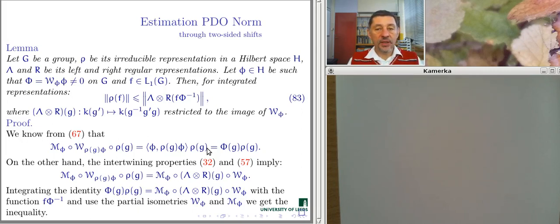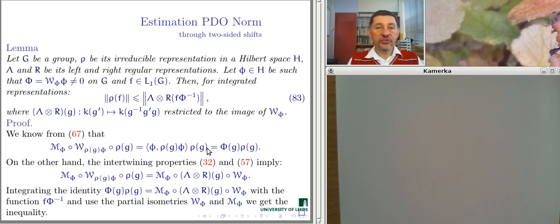You may not follow every detail of the brief presentation that follows on how exactly the L² estimation for pseudo-differential operators is obtained, but I hope you will follow the idea that at every stage we use only properties of the Heisenberg group. If you are convinced that the properties of the Heisenberg group are indeed sufficient for that demonstration, my goal will be fulfilled.